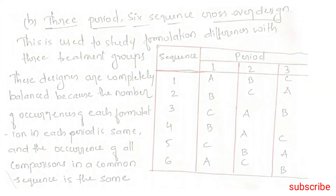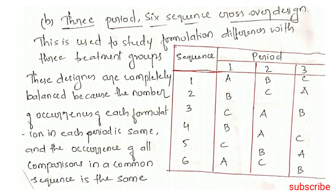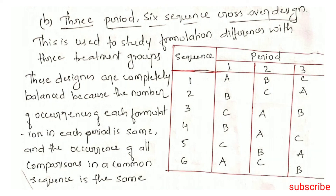3-Period 6-Sequence Crossover Design: This is used to study formulation differences with 3 treatment groups. These designs are completely balanced because the number of occurrences of each formulation in each period is the same, and the number of occurrences of all comparisons in a common sequence is also the same.